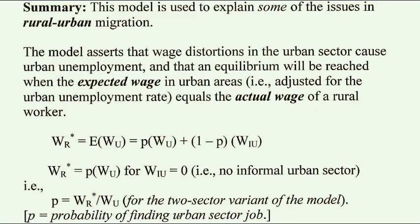The Harris-Todaro model is used to explain some of the issues in rural-urban migration. The model asserts that wage distortions in the urban sector cause urban unemployment, and that an equilibrium will be reached when the expected wage in urban areas equals the actual wage of a rural worker.